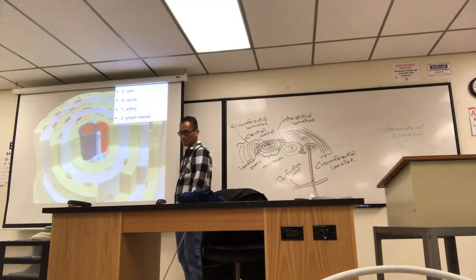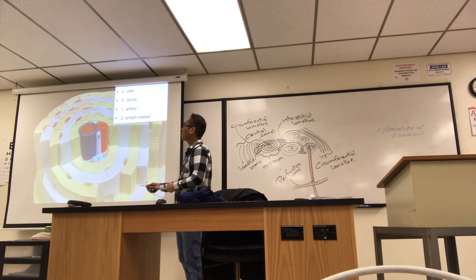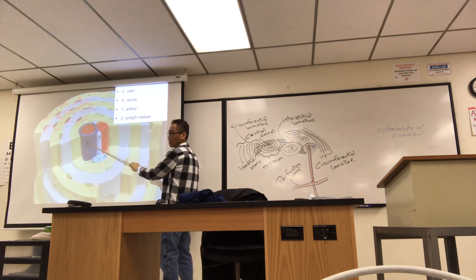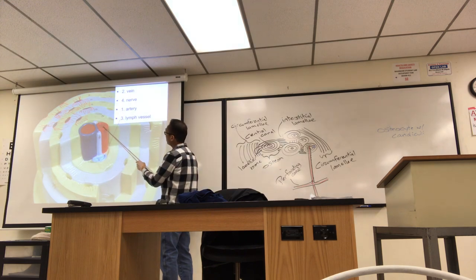All right, so these are the contents of the central canal. The big blue one, vein, artery, lymphatics. That's a nerve vessel.